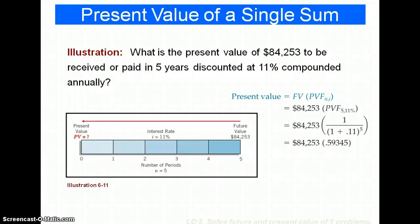The other way we can solve it is using the mathematical formula that we had earlier in the presentation. If I take the future value and multiply it by the present value calculation, I can arrive at the correct number. In this case, it's 1 divided by 1 plus the interest rate raised to the fifth power. I multiply that out, I get .59345. I multiply those together and I get $50,000.